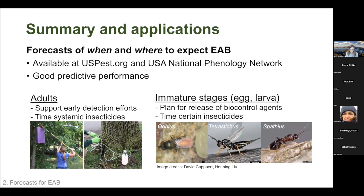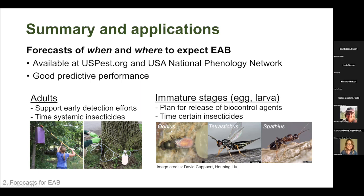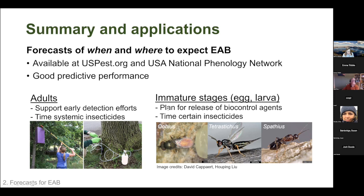In summary, I showed examples of forecasts for when and where to expect emerald ash borer. Forecasts are available at uspest.org and the USA National Phenology Network. I found evidence of good predictive performance especially for the adult stage. These forecasts can support early detection efforts — ensuring traps are deployed on time, knowing when to look for flying adults, timing preventative systemic insecticide injections, and planning releases of egg parasitoid Oobius and larval parasitoids Spathius species as biological control agents.